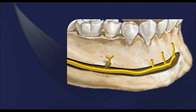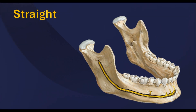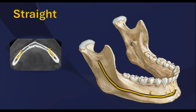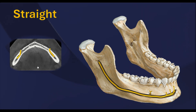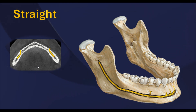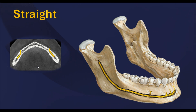The best way to visualize the mental loop is through CBCT — cone beam computed tomography. Traditional X-rays often fail to provide a clear picture, but CBCT allows for precise 3D assessment, making surgical planning safer and more accurate.